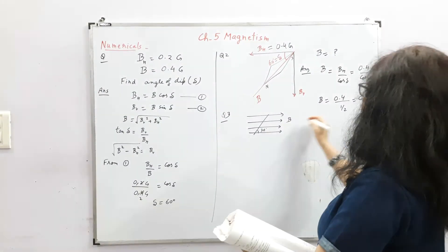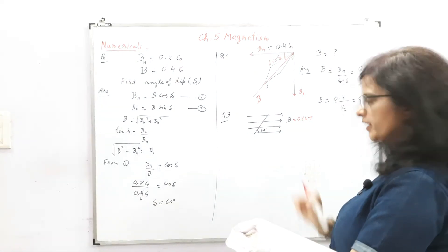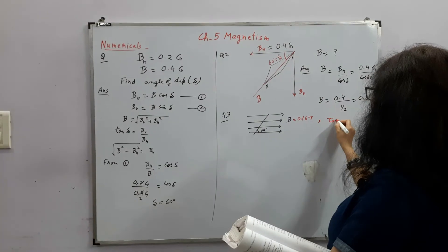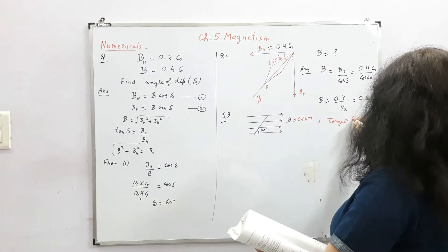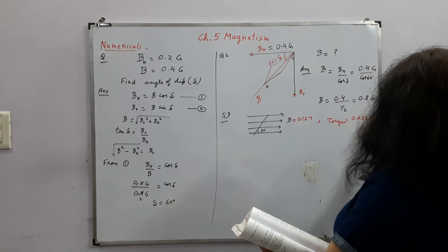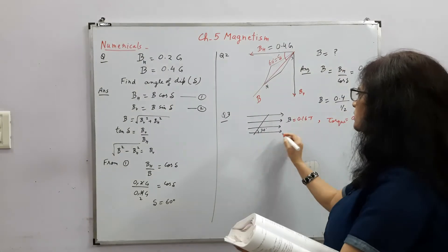So this magnetic field is given 0.6 Gauss and it experiences a torque of 0.032 Joules. So this is the external magnetic field.